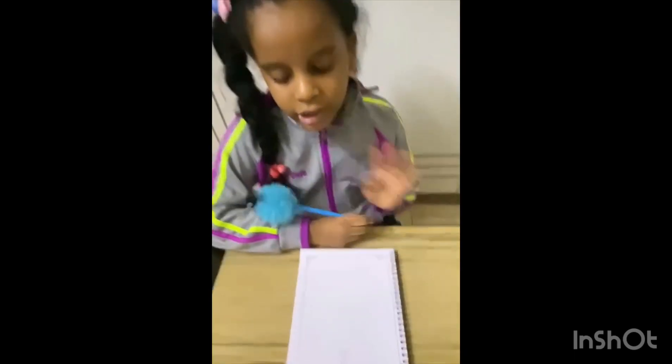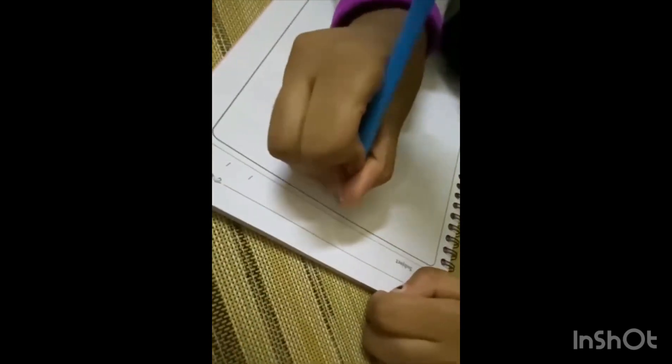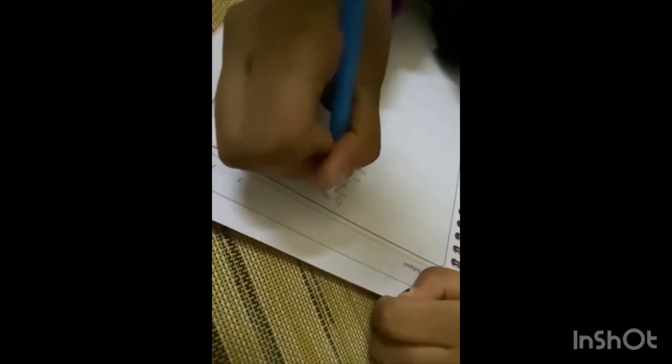Hi, teacher. Seventy-one minus 36. Seven will be six. One will be eleven.